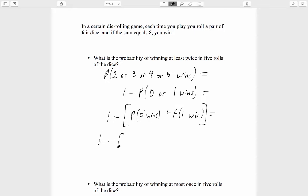So we've got 1 minus, open brackets, 5 choose 0 times 5 over 36 to the 0. This is the same experiment where we've already figured out that the probability of a win on a single roll is 5 out of 36. So probability of a win, raised to the 0 for 0 wins, times the probability of a loss, raised to the 5th power.